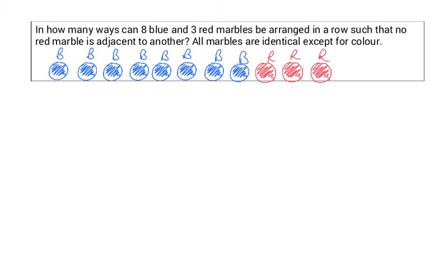Here's a nice permutation question. In how many ways can 8 blue and 3 red marbles be arranged in a row such that no red marble is adjacent to another? All marbles are identical except for colour.